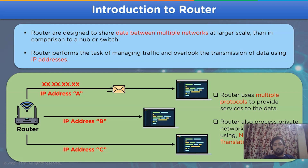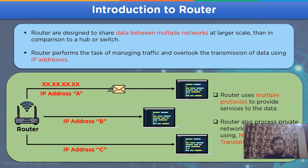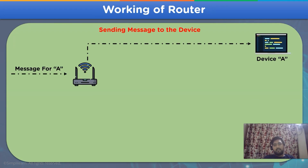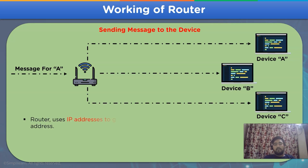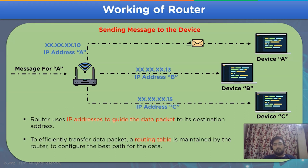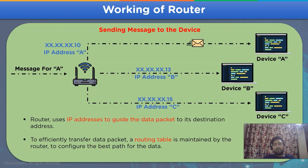This translation process is known as NAT — Network Address Translation. Now let's move on to the working of a network router. In this scenario, a message has been received by the router for device A, from which it will resolve the IP address for device A and share the data. The message delivery efficiency is highest in the case of a network router, as it uses a routing path from a routing table to guide the message to its destination point.